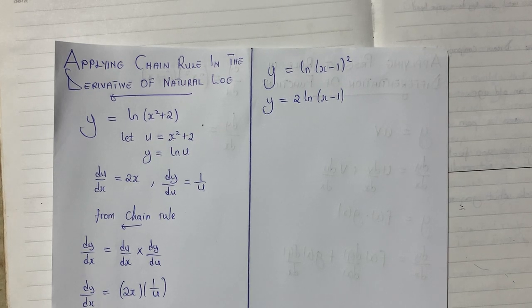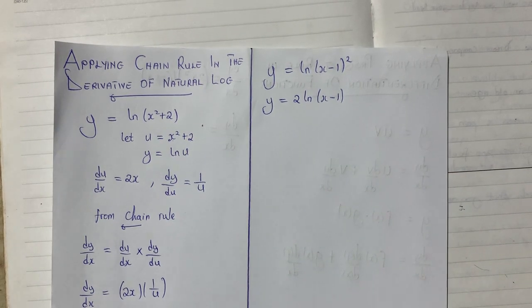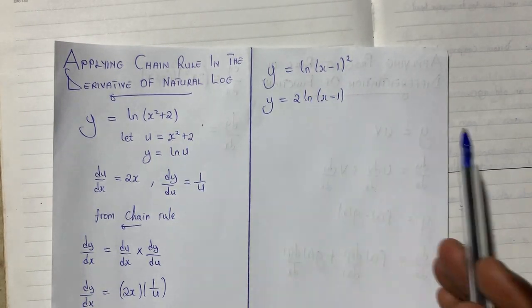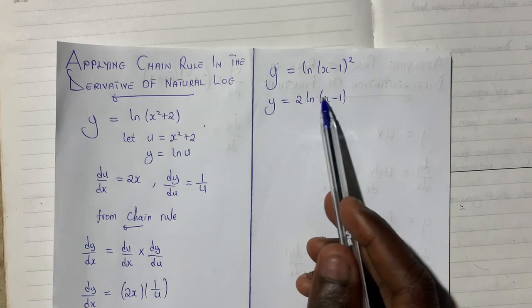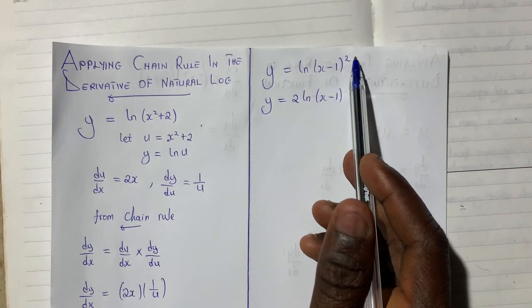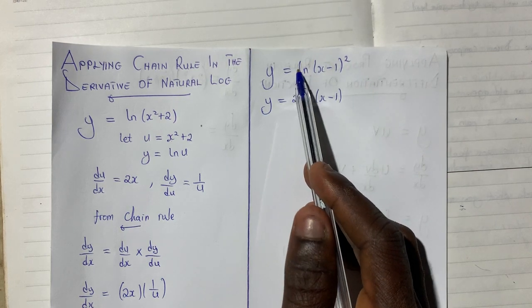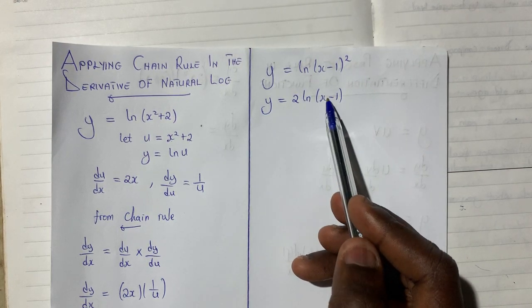It is possible that we can use product rule to differentiate many other equations, especially when those equations have 2 terms that are multiplying each other. But in this case, the equation was not given to us in 2 terms that are multiplying each other. But we use the indices or logarithmic rule to replace the 2 here so that it would be easier for us to differentiate.